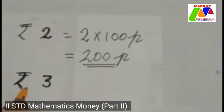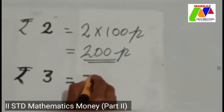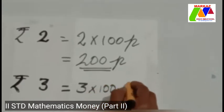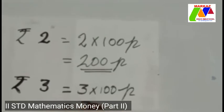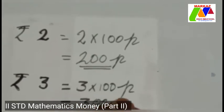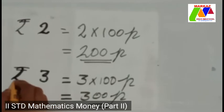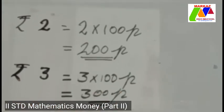Children, can you convert rupees three to paise? Rupees three is equal to three into hundred paise, which is equal to three hundred paise. Three rupees is equal to three hundred paise.